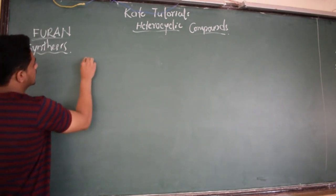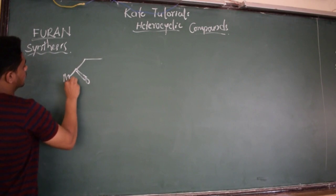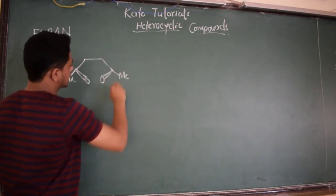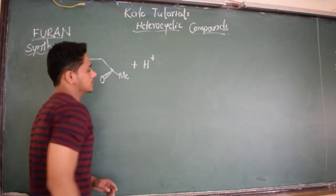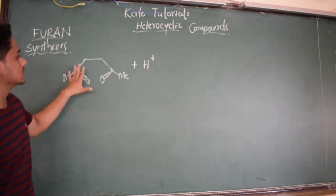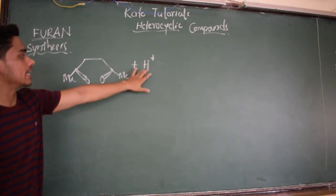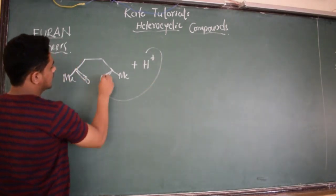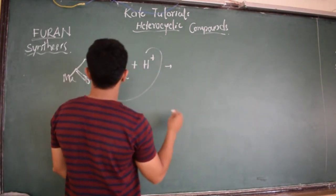We consider the dimethyl carbonyl compound. We consider acid H+ in the presence of benzene as solvent. This is neutral and this is an acidic medium. Since acid — H+ — is electron deficient, it is going to attack the oxygen, and the lone pair electron is going to shift onto oxygen.